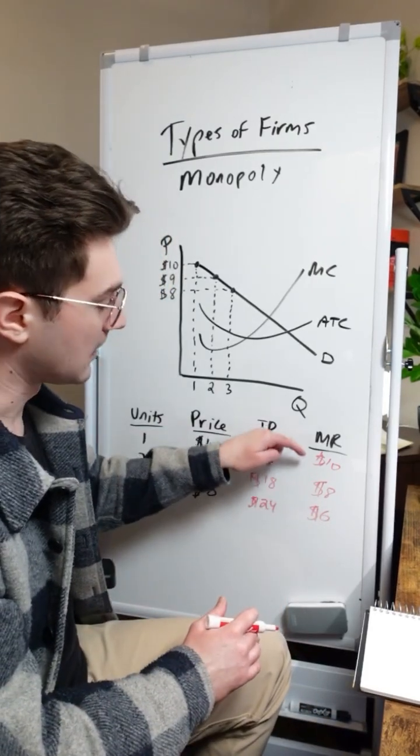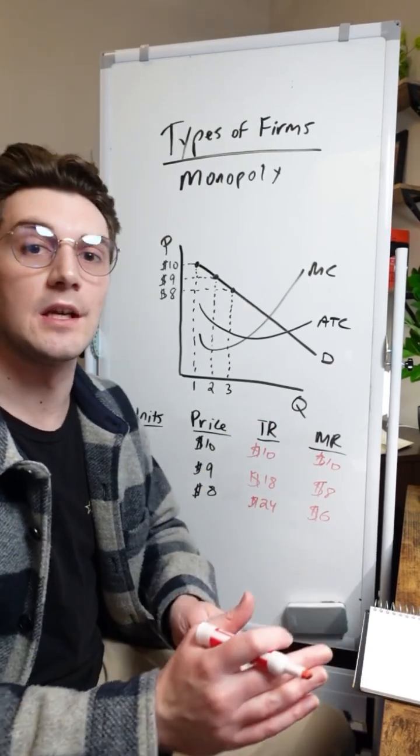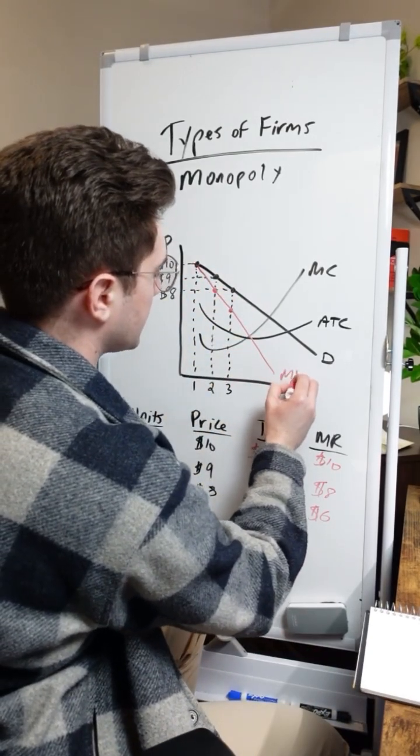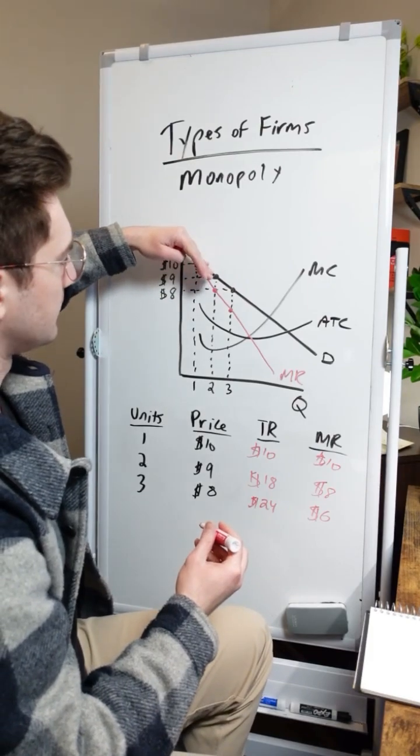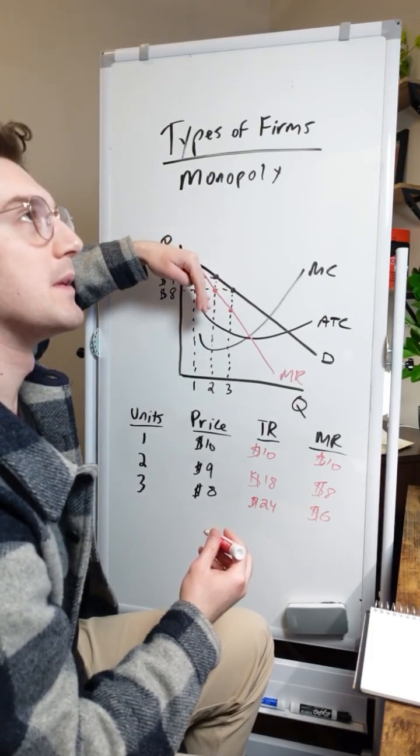And in turn, our marginal revenue is downward sloping as we sell more units. And we can draw this marginal revenue curve like so right here. Notice that it's about half the slope. Half the slope. I think that's the right way to say it.